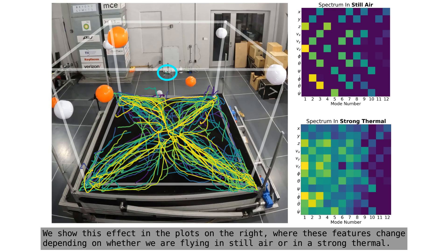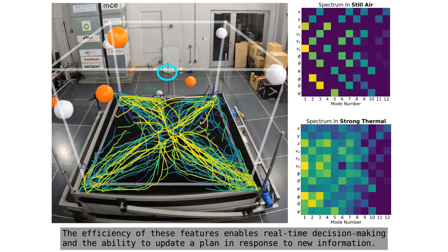We show this effect in the plots on the right, where these features change depending on whether we are flying in still air or in a strong thermal. The efficiency of these features enables real-time decision-making and the ability to update a plan in response to new information.